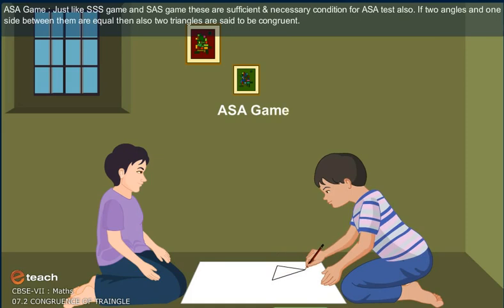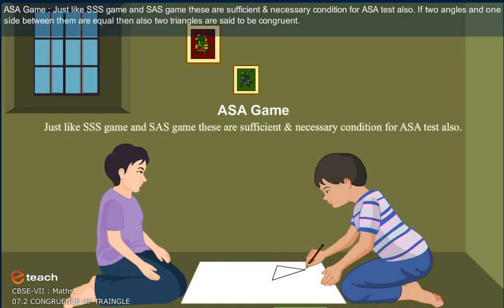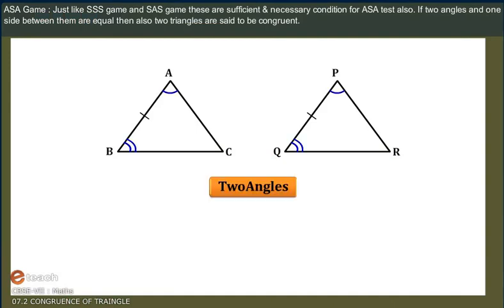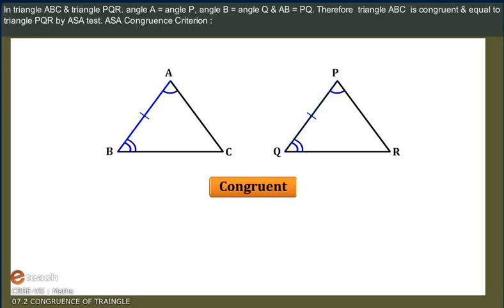Angle-Side-Angle Game. Just like the Side-Side-Side game and Side-Angle-Side game, these are sufficient and necessary conditions for the Angle-Side-Angle test also. If two angles and the one side between them are equal, then the two triangles are said to be congruent.